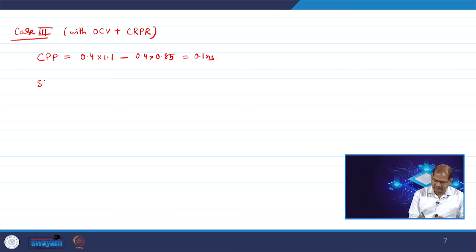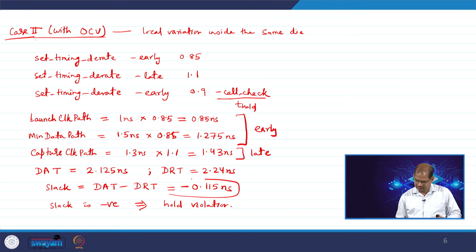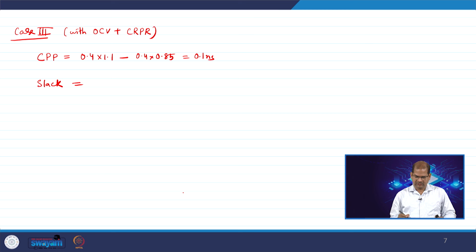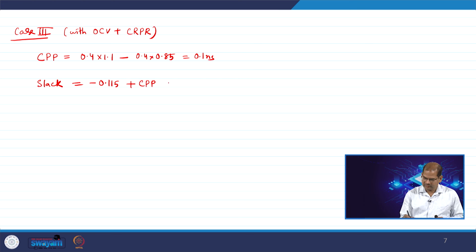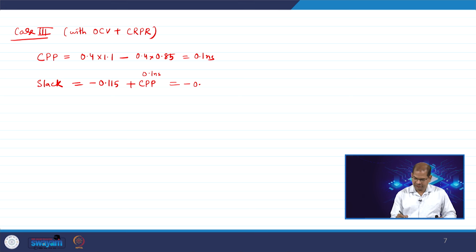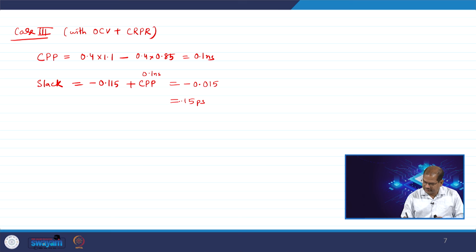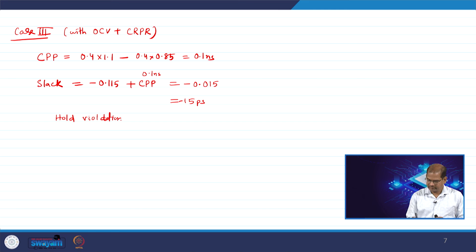The corrected slack with OCV plus CRPR is the OCV slack plus CPP: −0.115 + 0.1 = −0.015 ns. The slack is reduced compared to the OCV-only case, but it is still negative (−15 ps), so hold violation still exists. The violation is reduced but not eliminated.